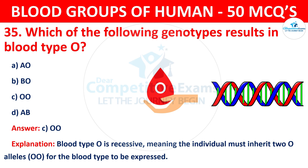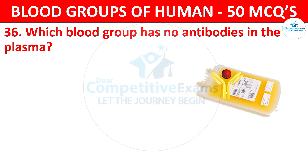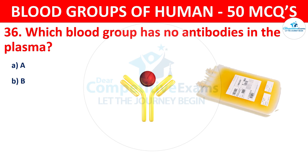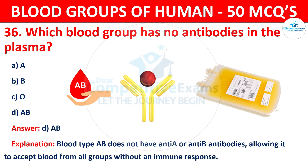Question 36: Which blood group has no antibodies in the plasma? The correct answer is D, AB blood group. Blood type AB does not have anti-A or anti-B antibodies, allowing it to accept blood from all groups without an immune response.